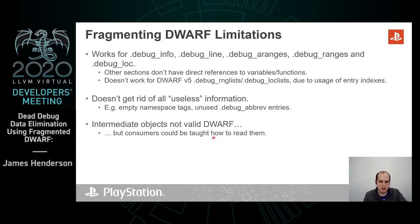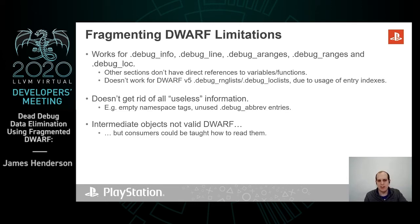This approach allows us to reduce the size of debug line, debug ranges, and so on, although there are some sections in the DWARF which we can't simplify in this way due to their structure — for example, use of entry indexes. It also doesn't get rid of all useless information; for example, it doesn't get rid of empty namespace tags and unused abbreviation entries. The intermediate objects are not valid DWARF, though we could teach consumers how to read them.